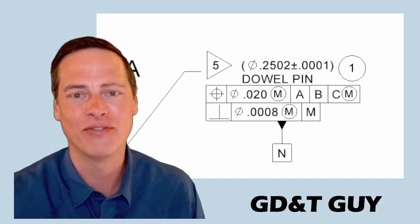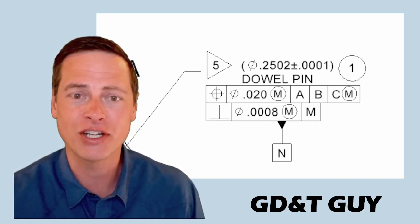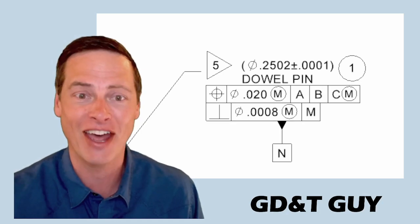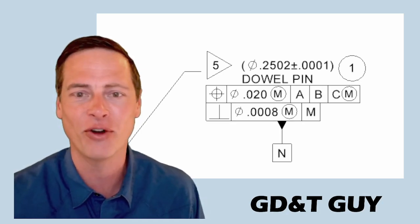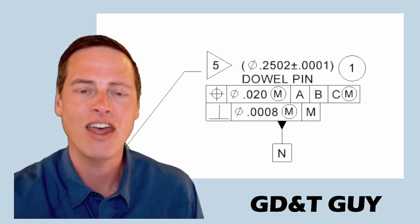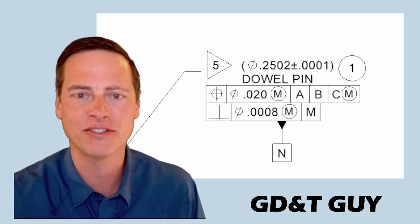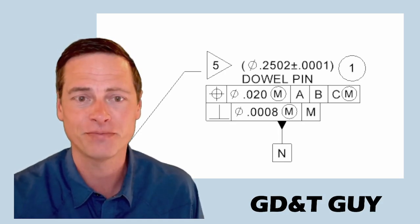So here's your big takeaway for video three. The virtual condition represents the cumulative effect of the size tolerance and the orientation tolerance. And this is the number you want to look at when you go to size the locating features on the next part. Okay, that's another video on dowel pins and there's plenty more to come.